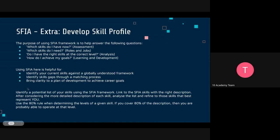When reading through the description of a level of a skill, you don't need to be exactly 100% able to do everything described there. If you can do around 80% of what's described, you have the skill at that level. Otherwise, you're probably at a lower level of that skill.